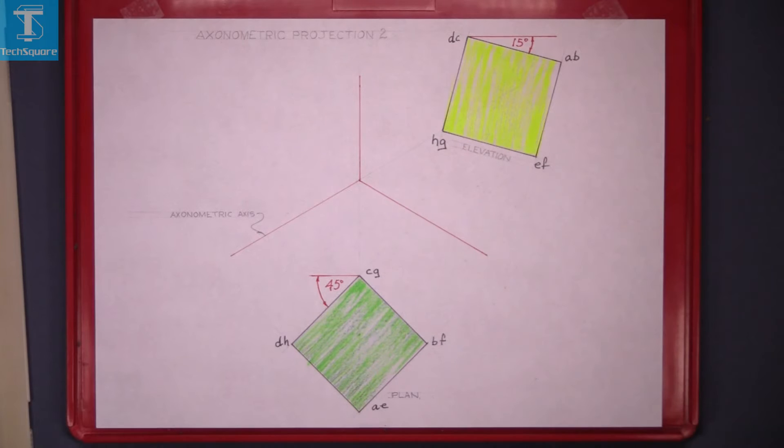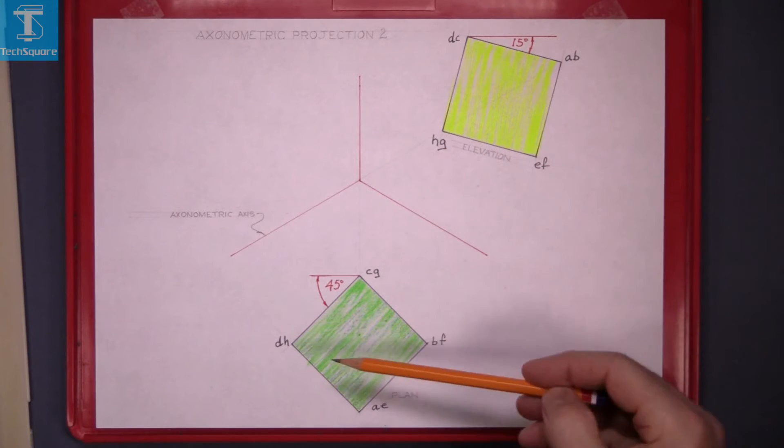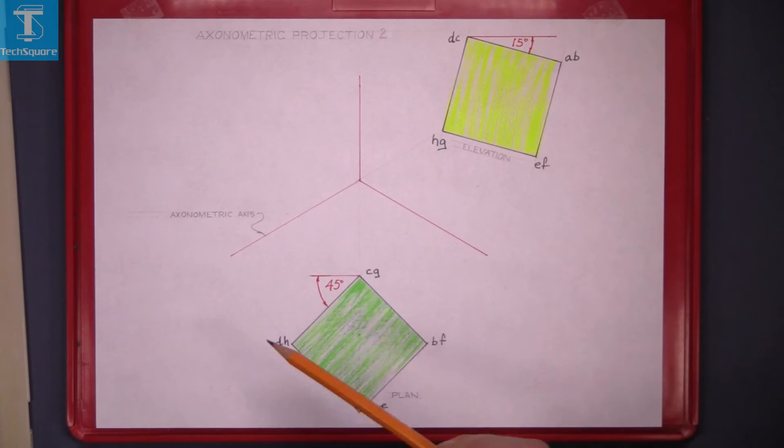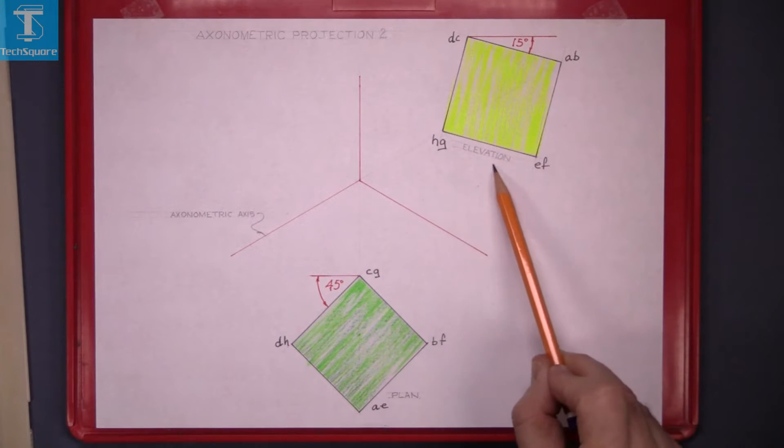Axonometric projection 2. This is a typical examination setup. Given the axonometric axis here and the elevation and plan of a solid,